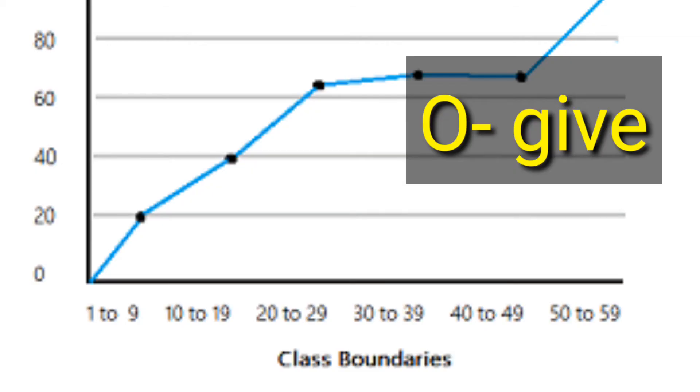Another graph is the ogive. When drawing the ogive, we use the cumulative frequency distribution table with class boundaries and cumulative frequency. Here we do not draw bars but we draw lines.